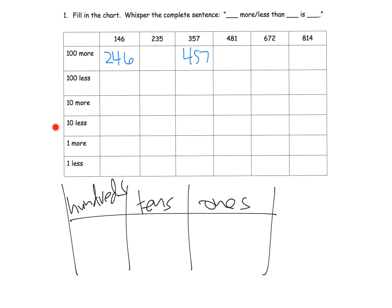A hundred more than 346 is 446. A hundred more than 357 is 457. Let's take a look at 10 less. 10 less, that's something I didn't really talk about in the previous slide, but it's the same idea.